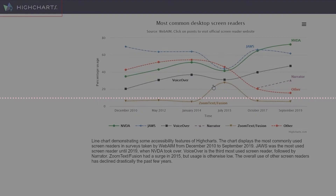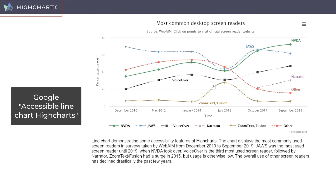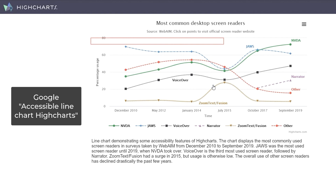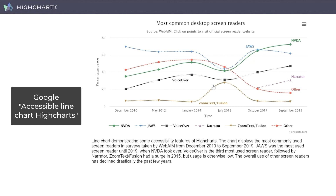I'm going to start exploring this the way I would explore most any web page — using the H command in JAWS to get an overview of what's on this page. Most common desktop screen readers, heading level five. Moving down: Line chart with six lines. Source: WebAIM. Click on points to visit official screen reader website. Line chart demonstrating some accessibility features of Highcharts. The chart displays the most commonly used screen readers in surveys taken by WebAIM, from December 2010 to September 2019. JAWS was the most used screen reader until 2019 when NVDA took over. VoiceOver is the third most used screen reader, followed by Narrator. ZoomText/Fusion had a surge in 2015 but usage is otherwise low. The overall use of other screen readers has declined drastically.